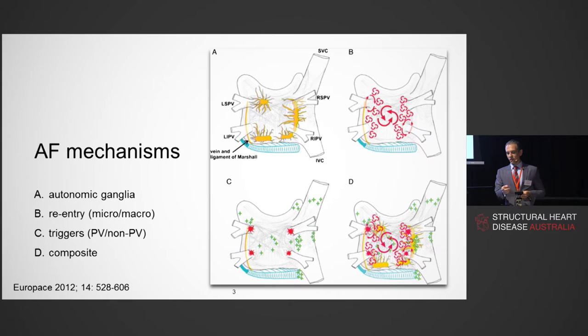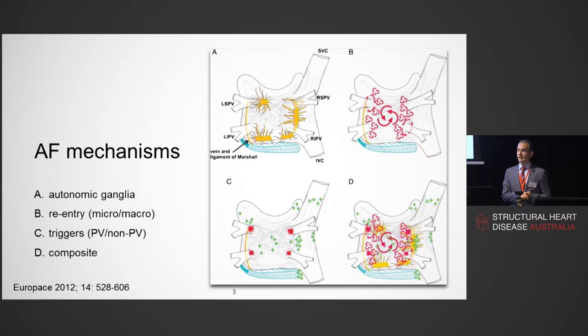I recommend this consensus statement on AF ablation, which I'll show at the end. From it comes this excellent diagram. Looking at panel C, I'd put that first as a mechanism of atrial fibrillation. The pulmonary veins have long been understood to be the primary mechanism for triggering and maintaining atrial fibrillation, as shown by those red stars.